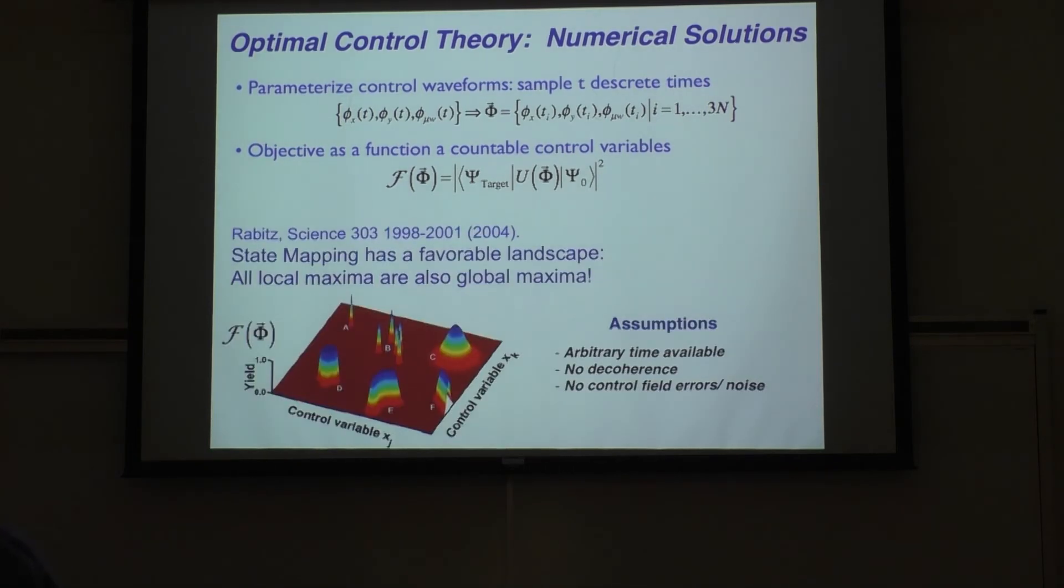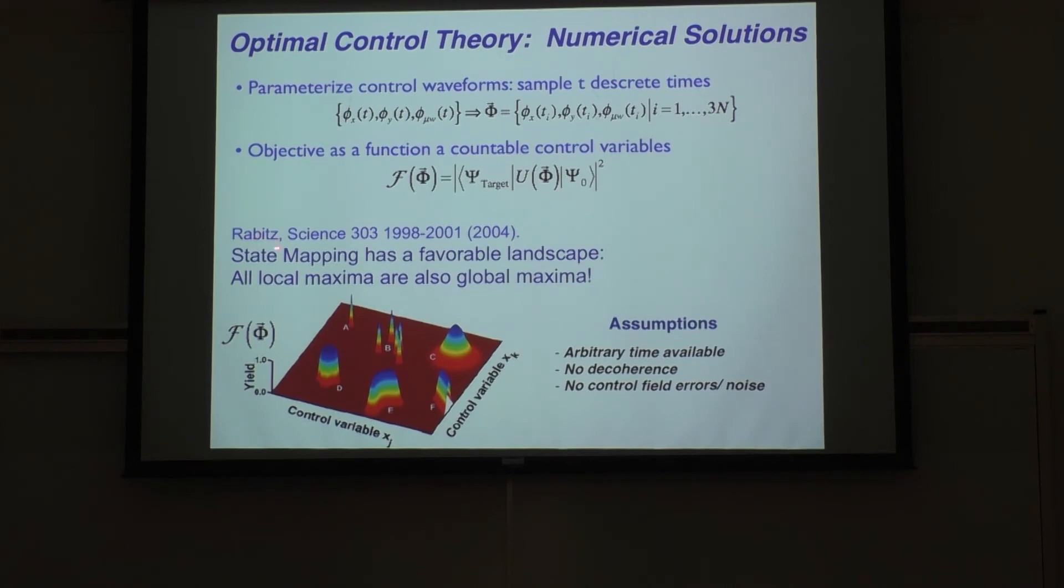That's what the whole business of optimal control is about. Optimal control is saying, can I optimize over a set of control parameters in some way that will enable me to achieve a control task with a high probability. This goes back to work from Herschel Rabitz's group, who was a physical chemist trying to break molecule bonds with lasers, that showed that in principle, the landscape is not craggly. The problem is if I climb it and I think I'm on the top of the mountain, but I'm on this small little hill, I didn't get anywhere. It turns out the landscape for these quantum control problems is more like this.